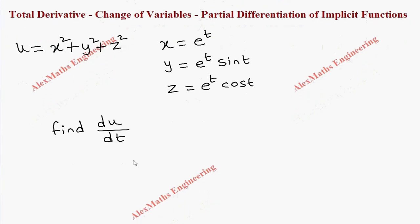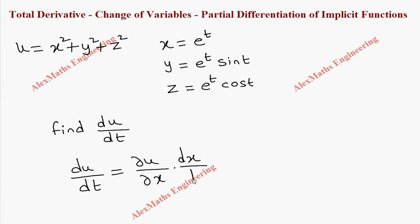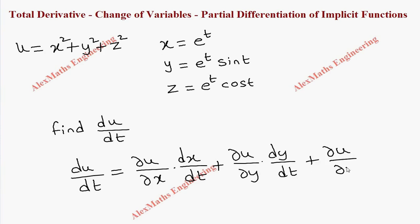Now the formula for du by dt is: partial u by partial x into dx by dt, plus partial u by partial y into dy by dt, and the third term is partial u by partial z into dz by dt.